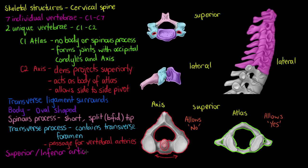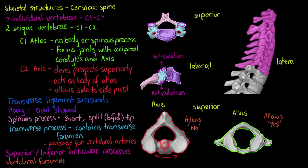The next feature we can see on our transverse processes is the superior and inferior articular processes — I'll just outline those as well. We have the superior process here and the inferior on the bottom, and we'll also see those superior processes on the superior view of the cervical vertebrae. These are points of articulation that connect superiorly and inferiorly with the next vertebrae in the column. The last feature is our vertebral foramen — the hole in the vertebrae — which has a somewhat oval shape for the passage of our spinal cord.